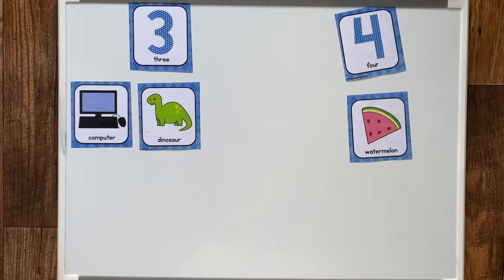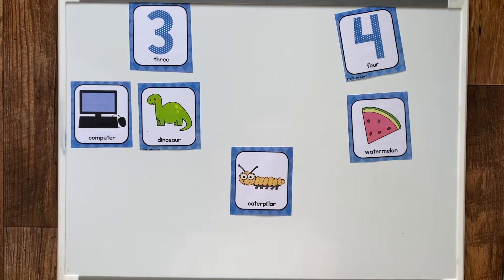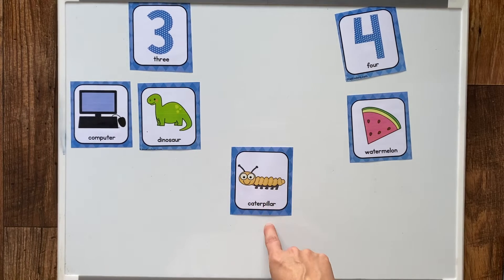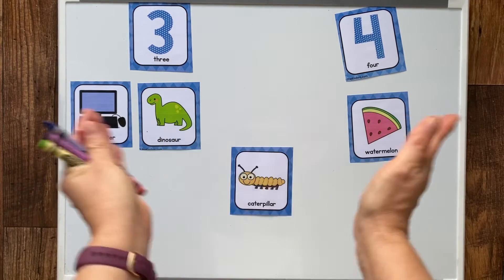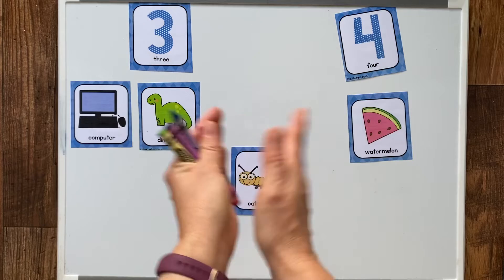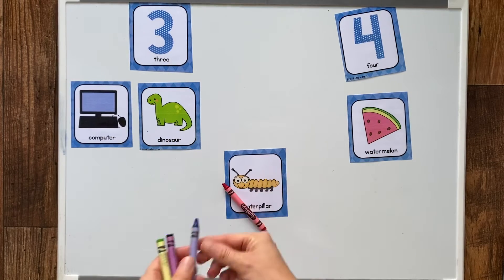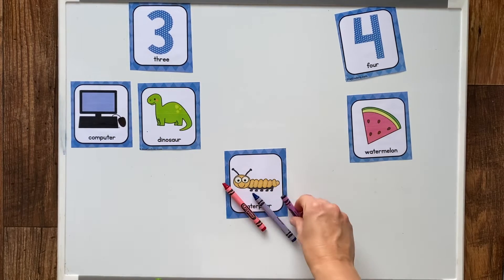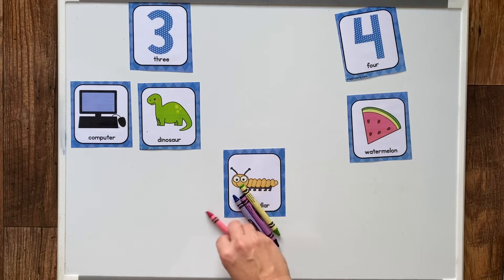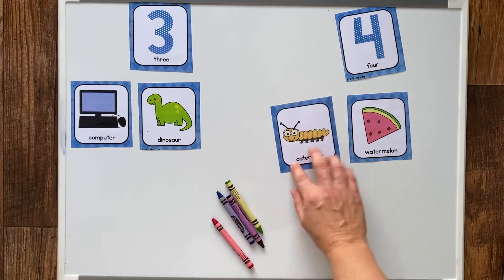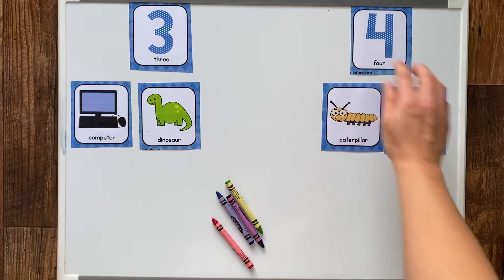Let's do another one — caterpillar. Let's clap it. Caterpillar. Now the crayons. Caterpillar. Two plus two makes four. That's four crayons, four syllables. Caterpillar goes with the number four.